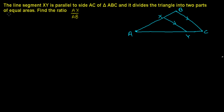Here I have a very interesting question from the chapter Similarity of Triangles. The question says: the line segment XY is parallel to the side AC of triangle ABC. Let me first help you understand this question.